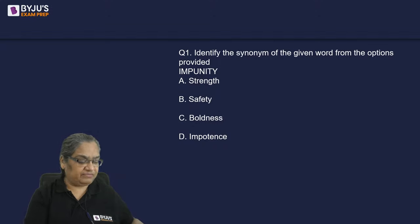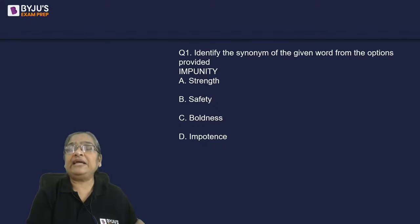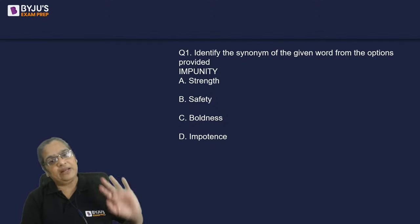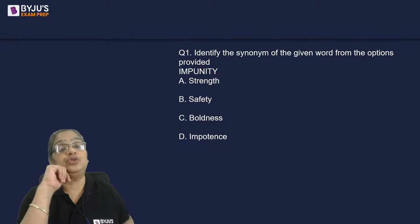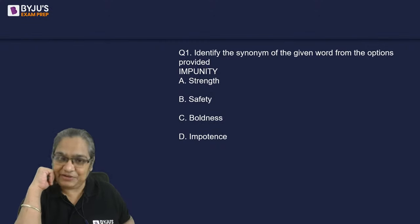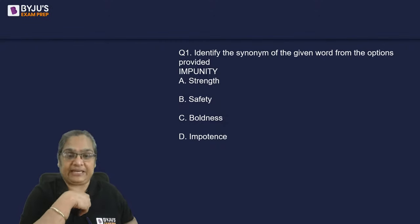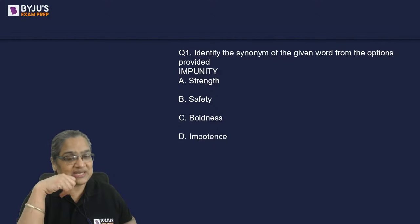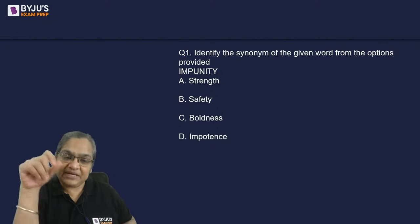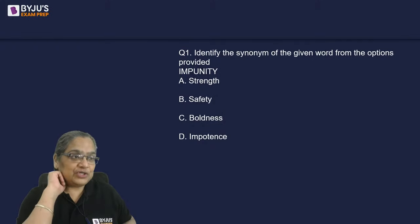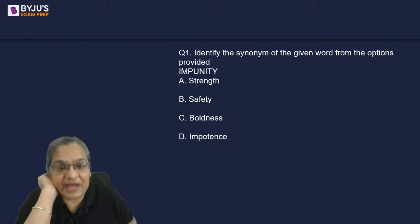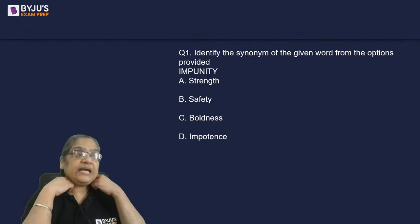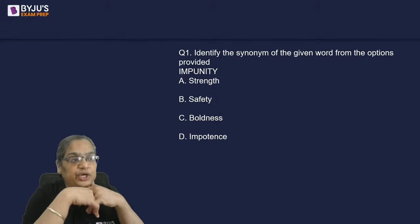For example, the word 'transitive' — someone used the definition of transitive verb, but here it meant something that transferred from generation to generation. Same way, the word 'impunity' — you might know it in two different ways. What is the meaning of impunity? Option A: strength, B: safety, C: boldness, D: impotence.